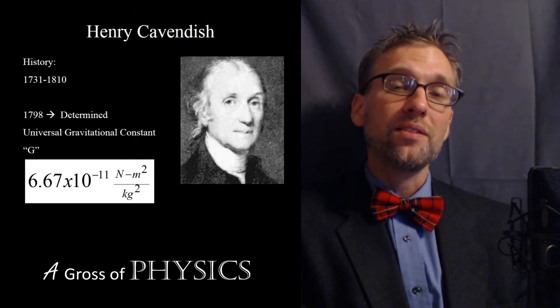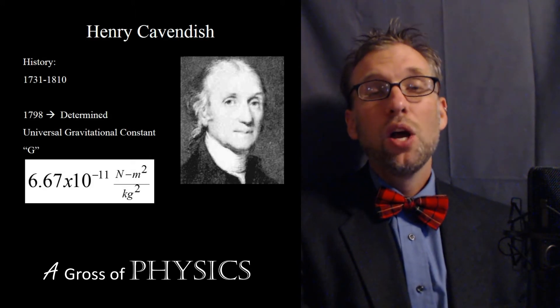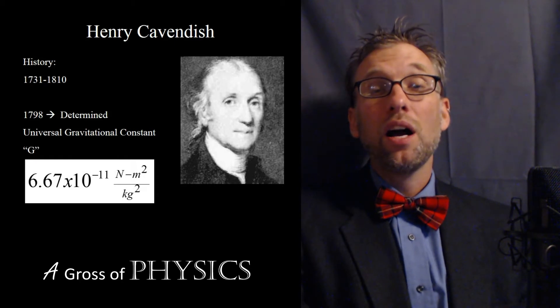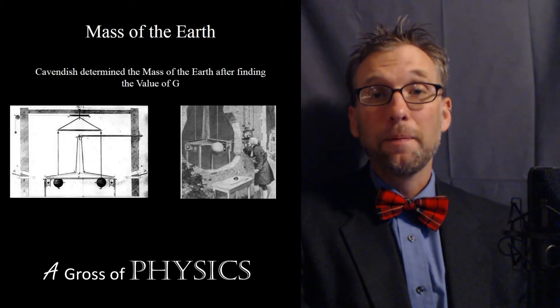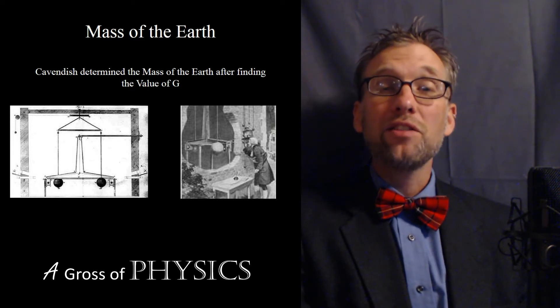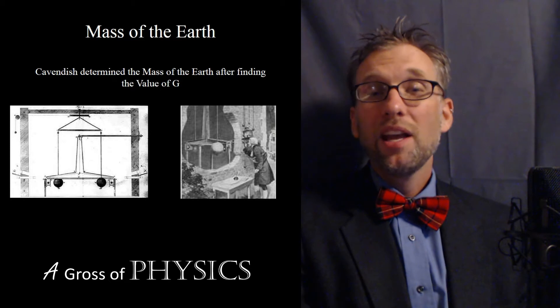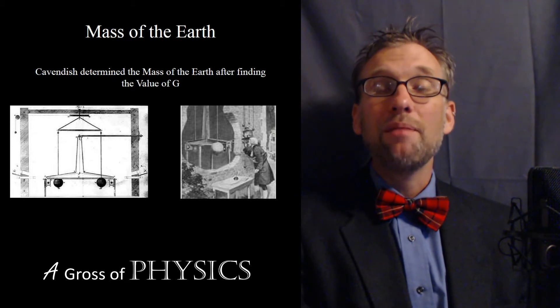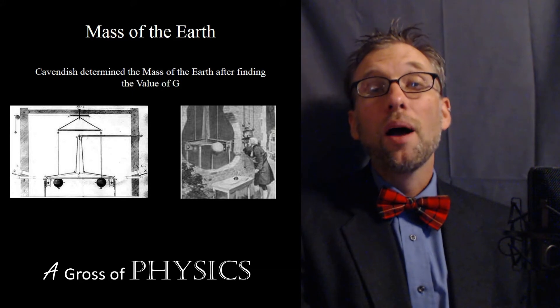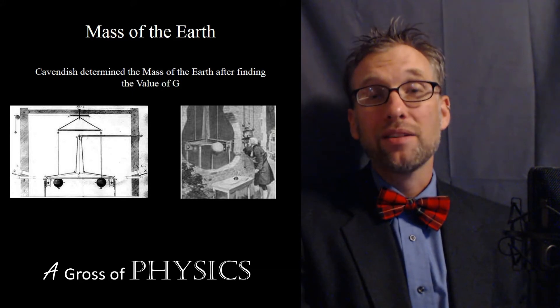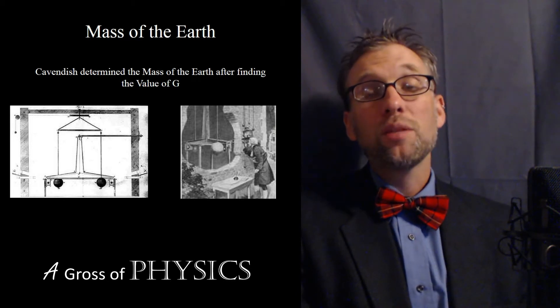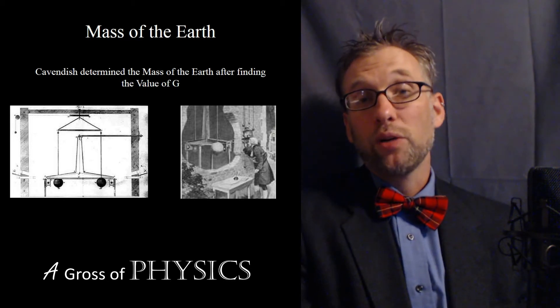The way he was able to do this is he set up a device where he took a long bar and he hung it on a string connected to the ceiling. Near the bar he had two heavy masses, and on the ends of the bar were very light masses. What he was able to do is time the oscillations of those masses on the bar as they were attracted to the other masses.